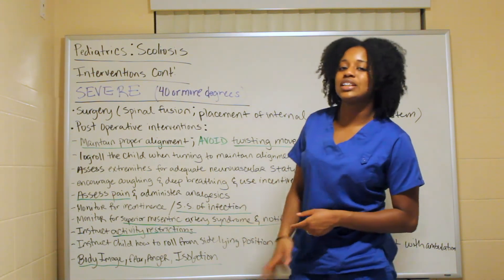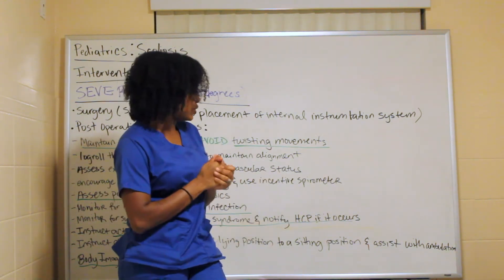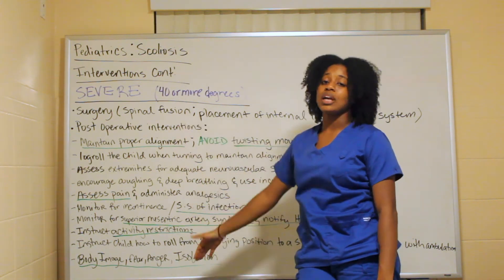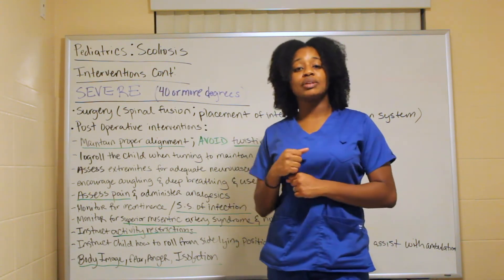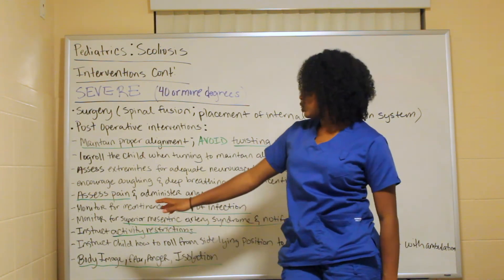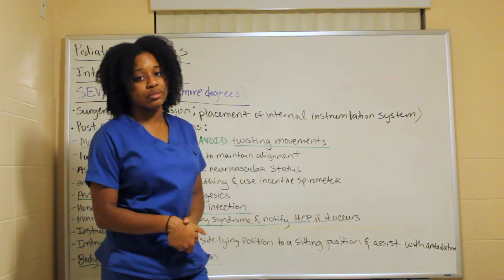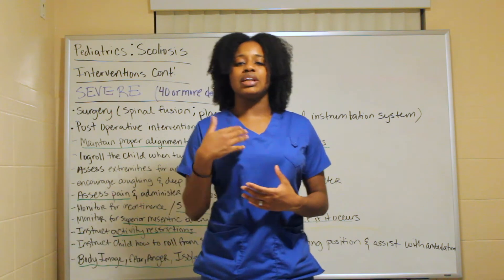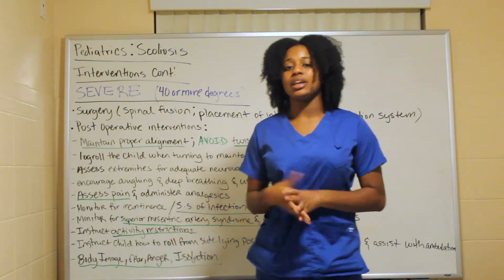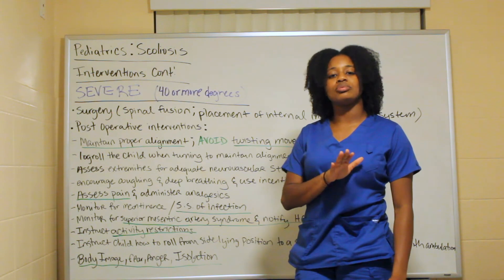Monitor for superior mesenteric artery syndrome and notify the healthcare provider if it occurs. Instruct activity restrictions to maintain proper alignment — activities involving bending, twisting, or vigorous movement should be restricted. Instruct the child on how to roll from a side-lying position to a sitting position, and assist with ambulation right after surgery.